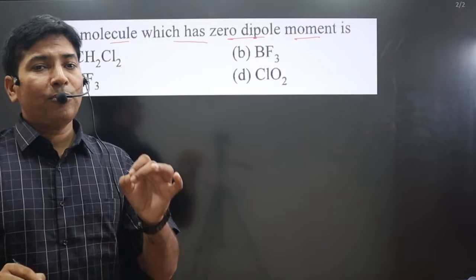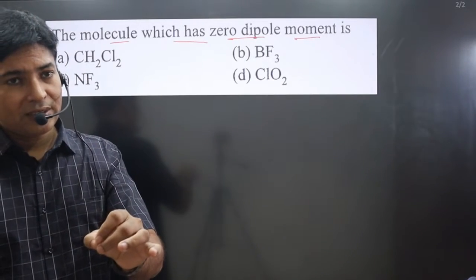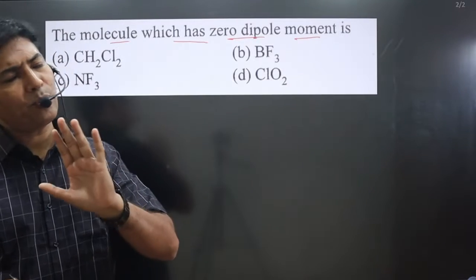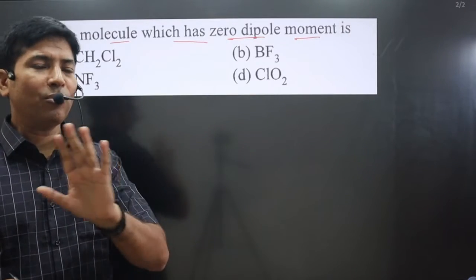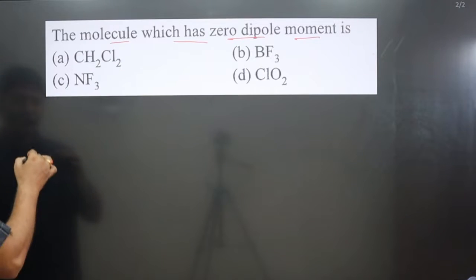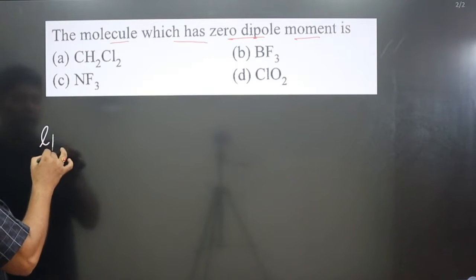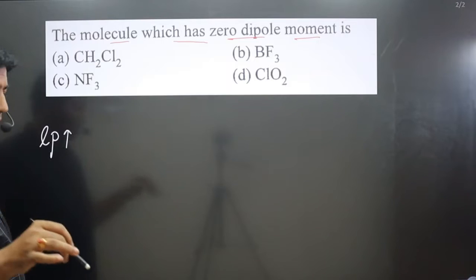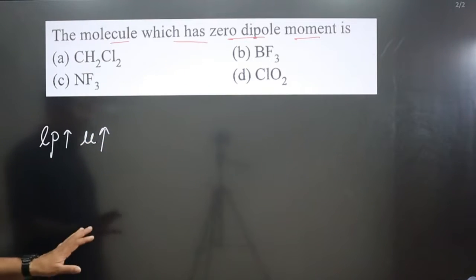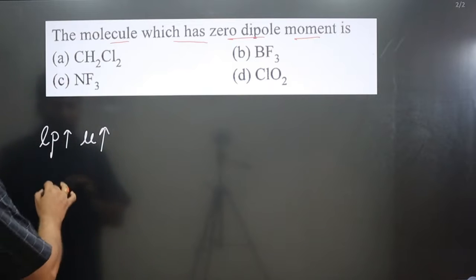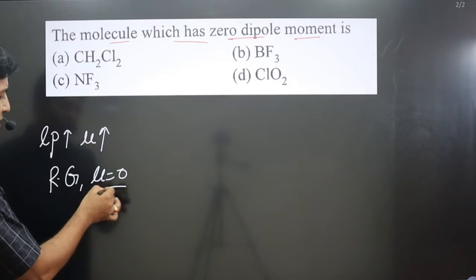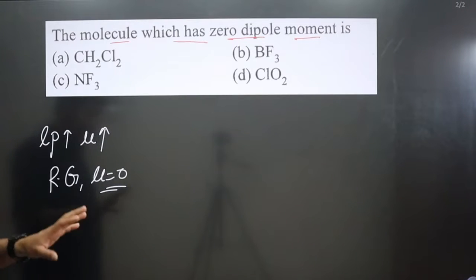If the central element has a lone pair in a molecule, its dipole moment will never be zero — some polarity will be there. Higher the number of lone pairs on the central element in a molecule, higher the dipole moment. In the case of regular geometry, dipole moment for the molecule will be zero, but there are some exceptions.